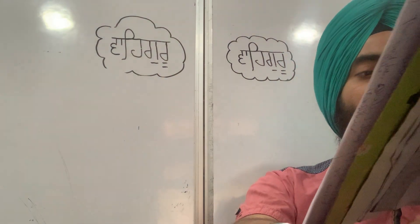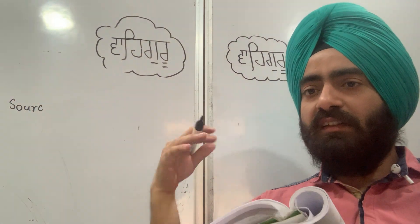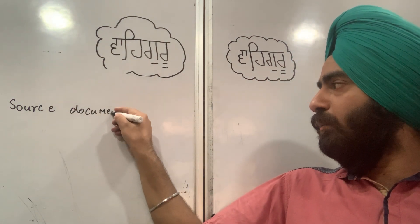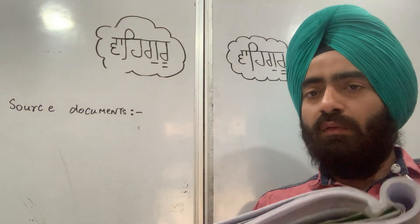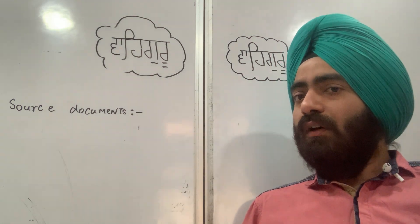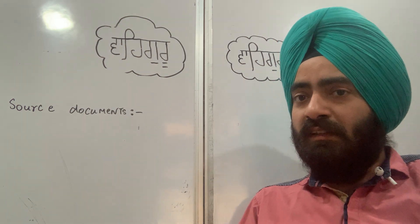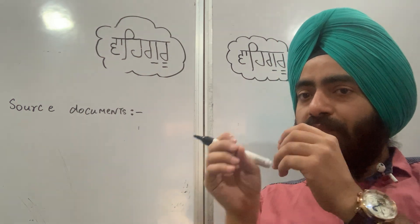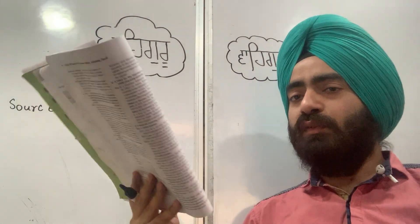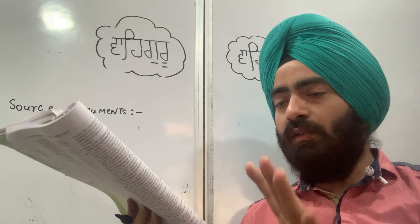So if the source document definition comes in your paper, what will you write? Source documents: documents on the basis of which transactions are recorded in the books of account are called source documents.